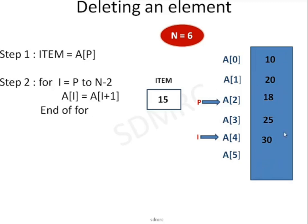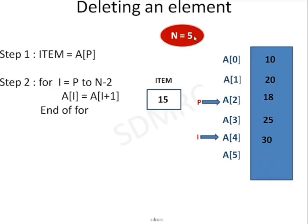Now there are only 5 elements. I had 6 elements; because of the removal, there are only 5. So n has to be modified. Step number 3: n = n minus 1. Step number 4: Exit.